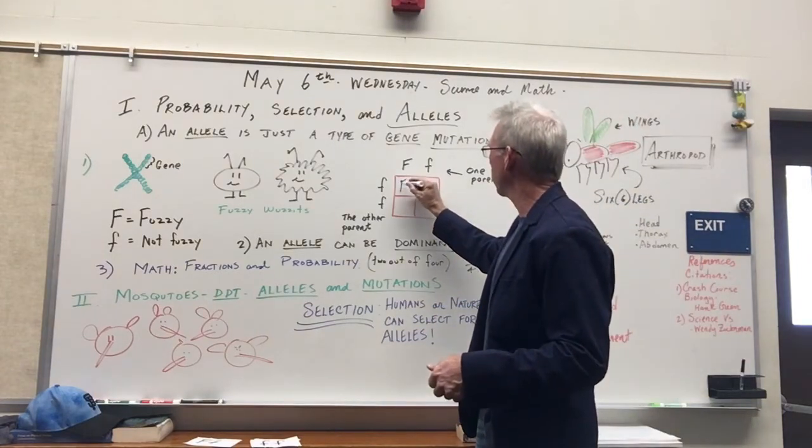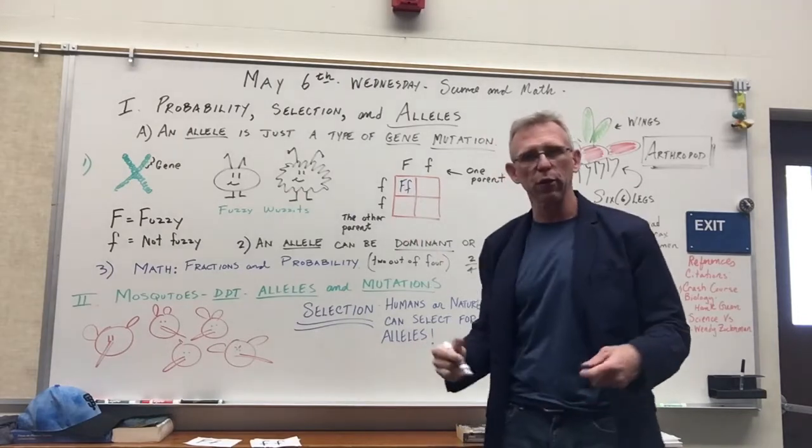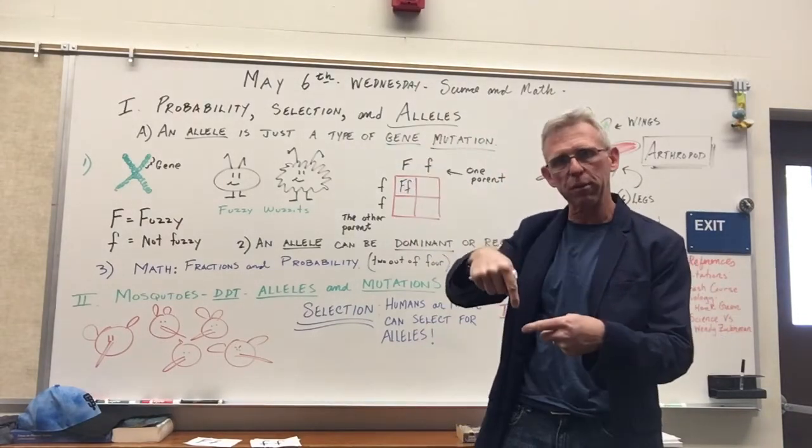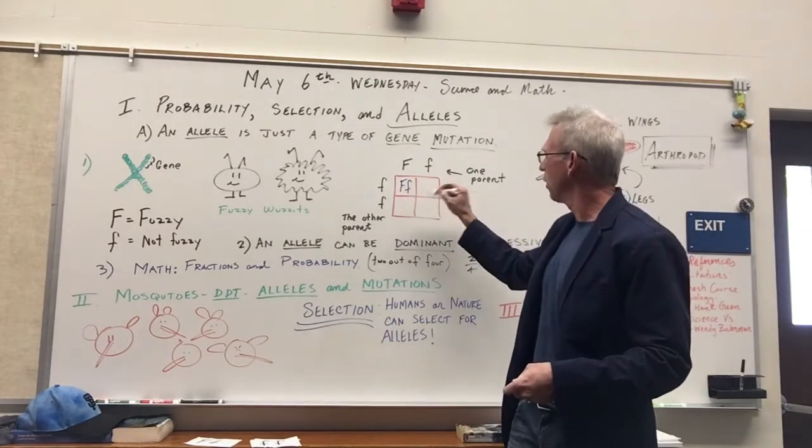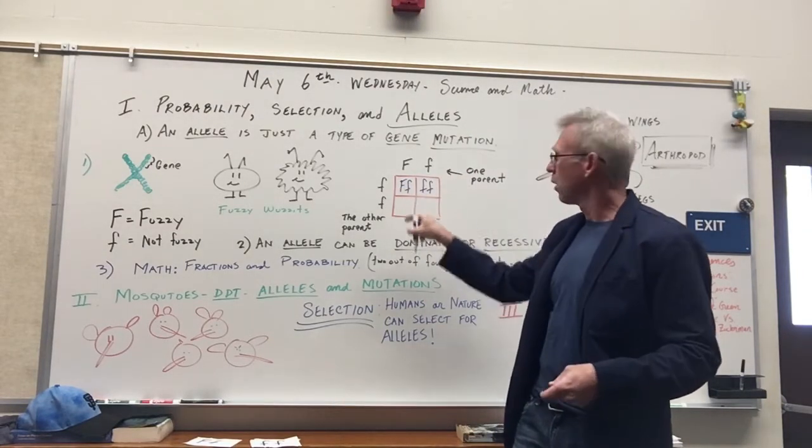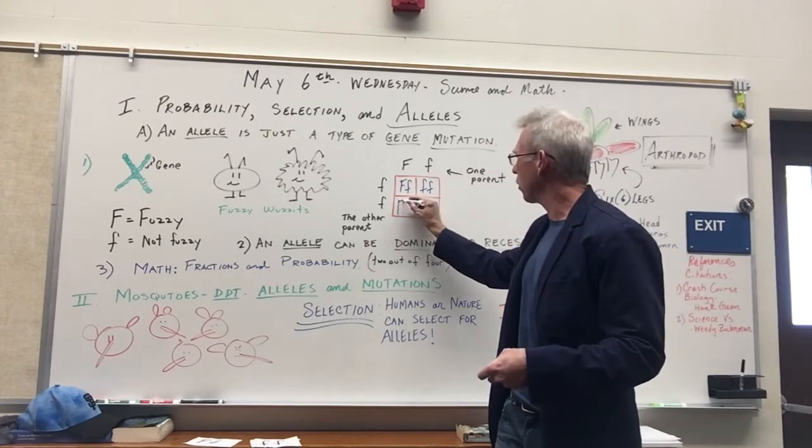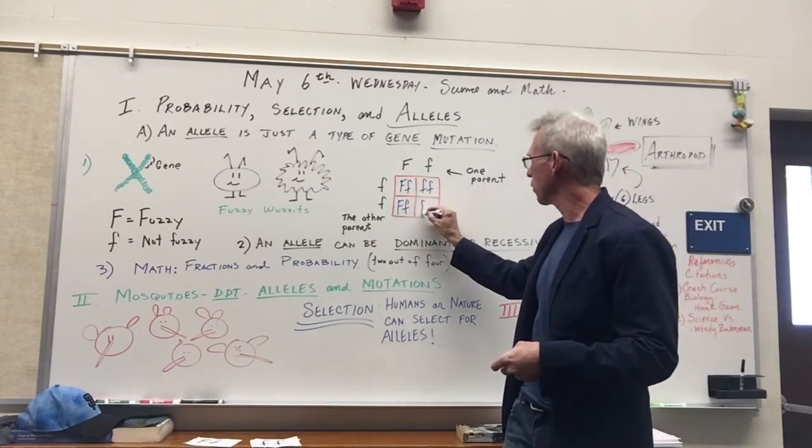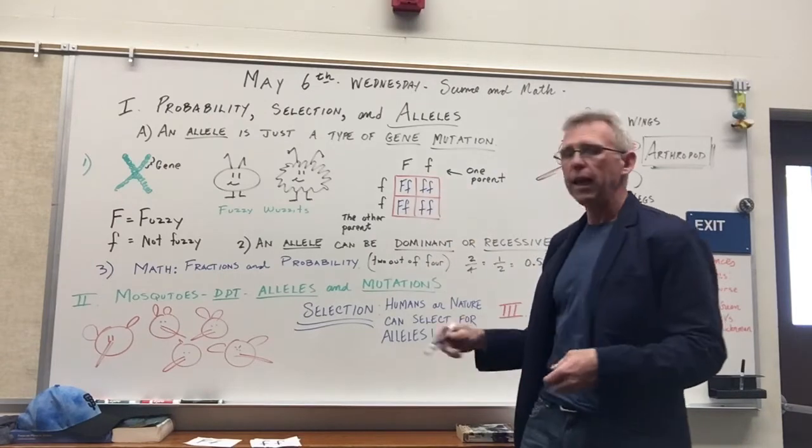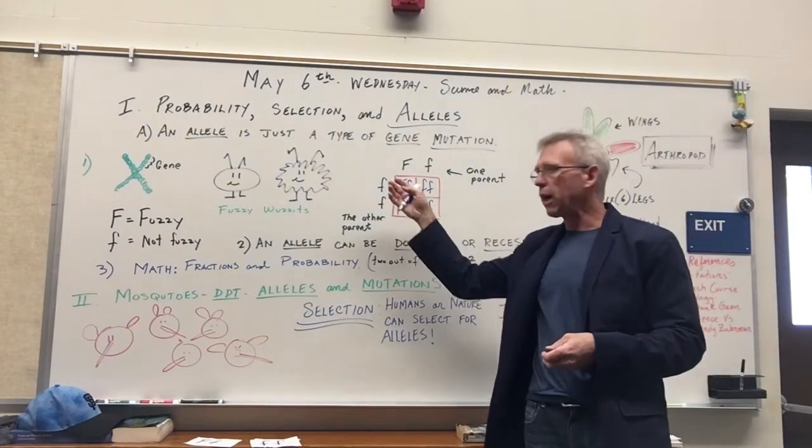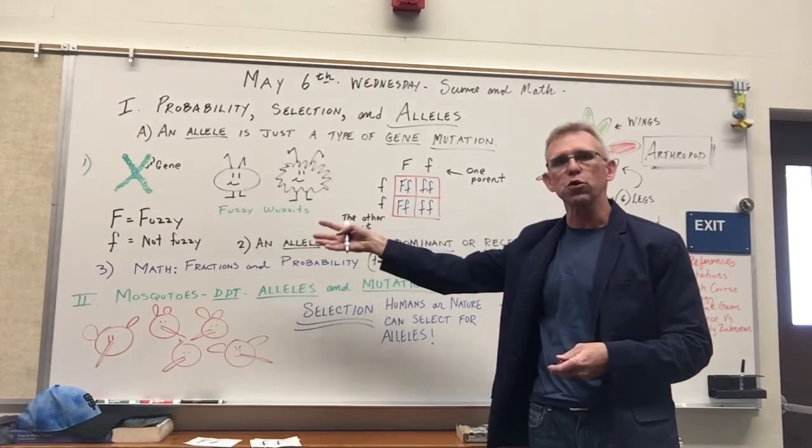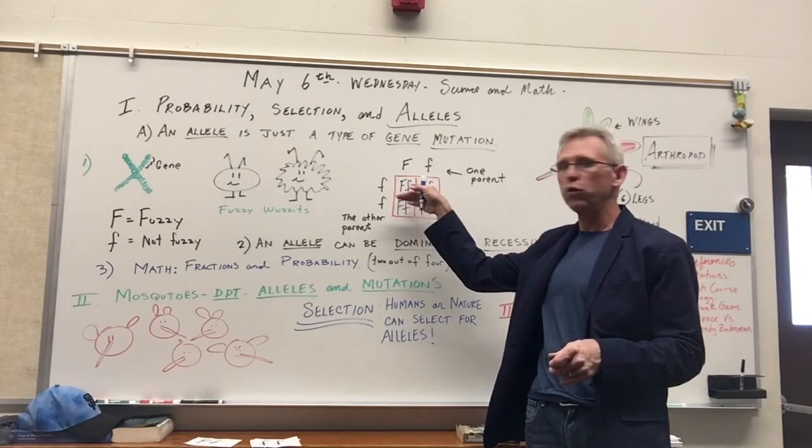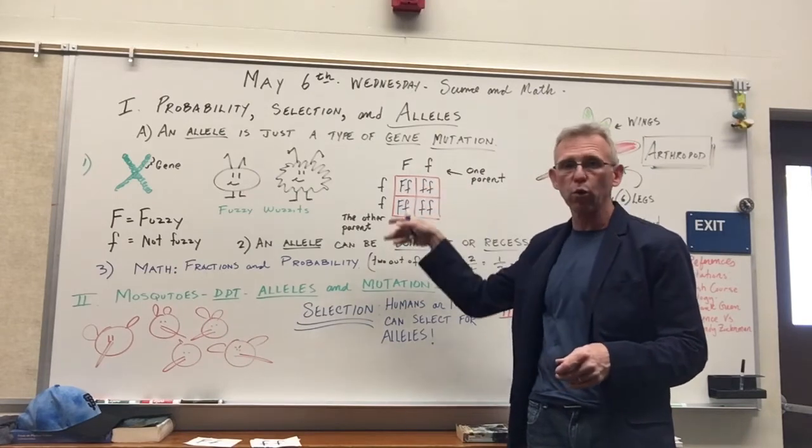But if you check out this right here, a Punnett square, the Punnett square shows up like this. These represent four possible offspring, four possible kids from these fuzzy wuzzits getting together. So you've got capital F, capital F, a little bit like if you ever played Battleship or Bingo, you just kind of go from the top and from the side and you see where they meet up in the square. This one right here, small f, small f. This one right here, capital F, small f. And finally over here, small f, small f. In other words, if you had two of these made-up creatures getting together, the probability is that their offspring would have two that were fuzzy and two that were not.